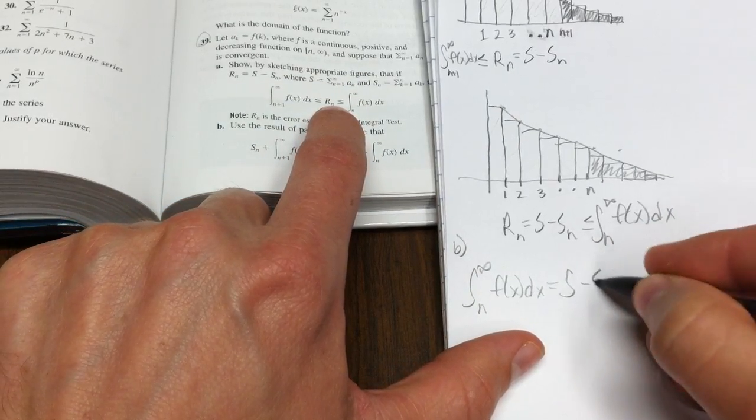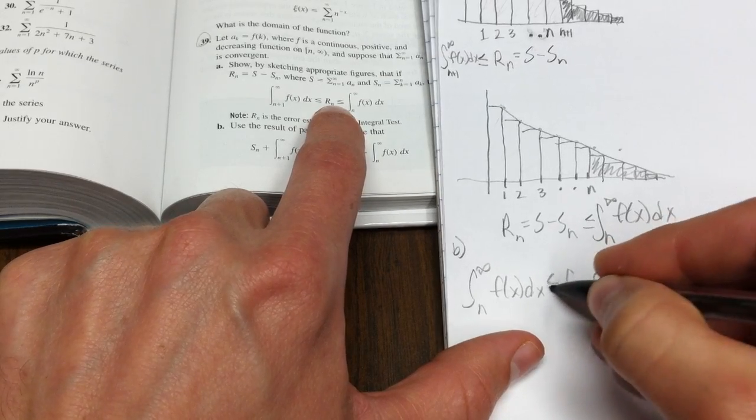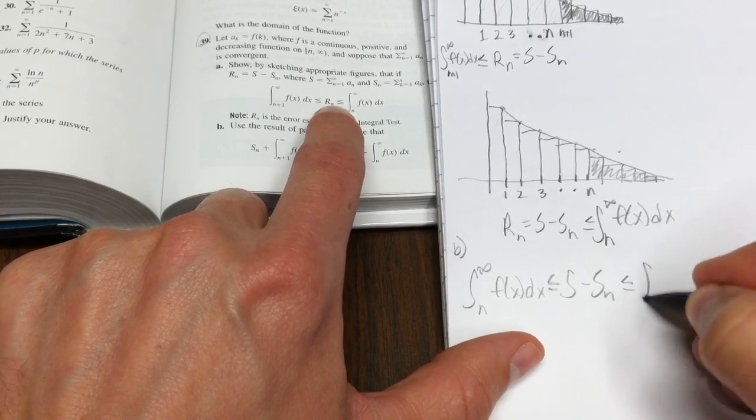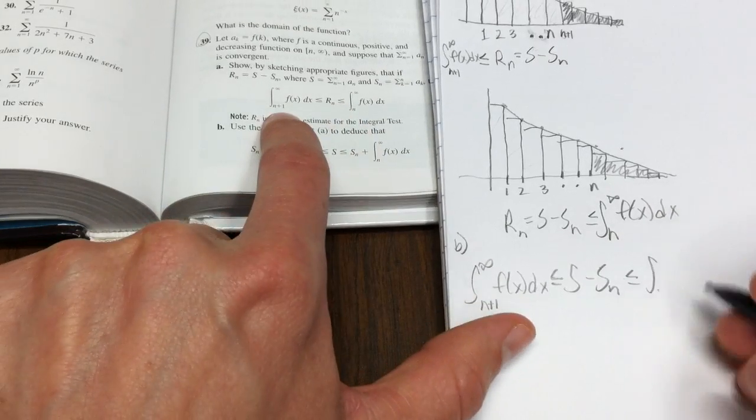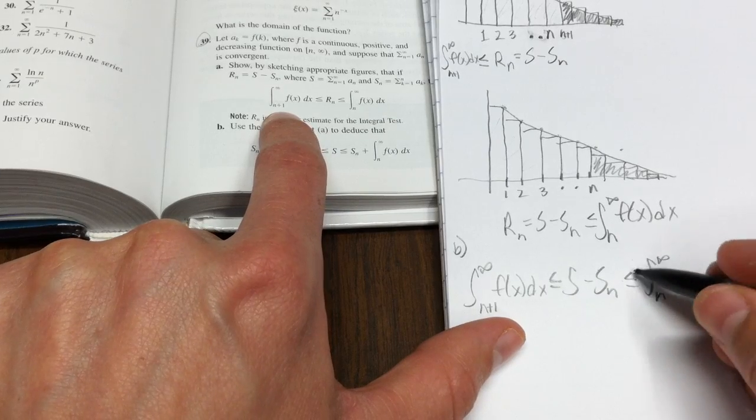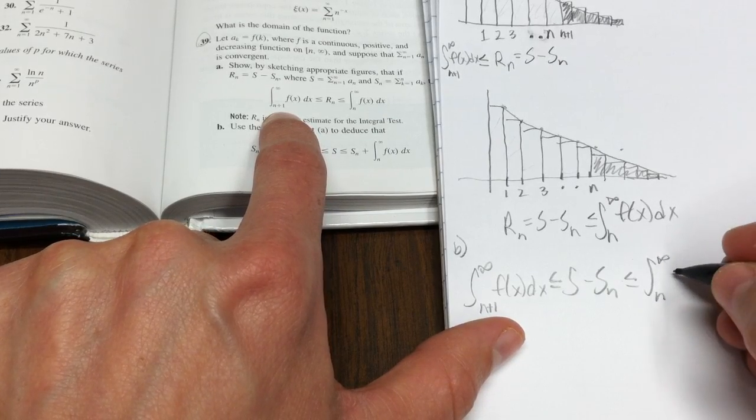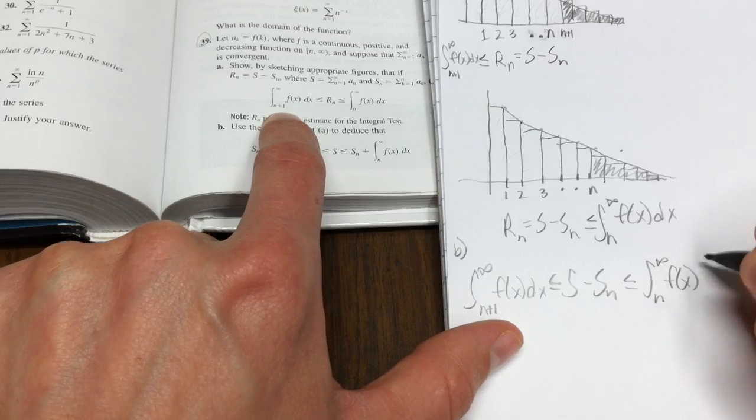This equals the N error, that's S minus Sn, less than or equal to, and that's less than or equal to the integral, and I didn't put in my N plus 1, have to follow the directions, that's less than or equal to the integral from N to infinity of f of x dx.